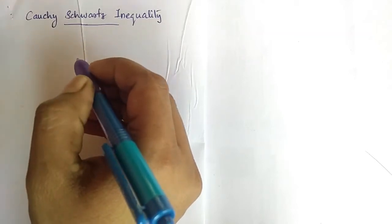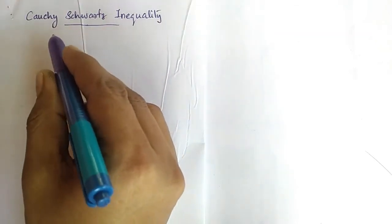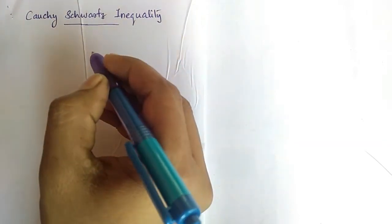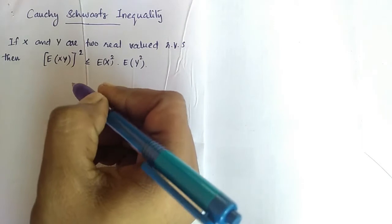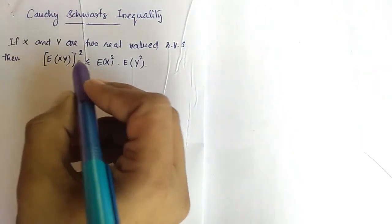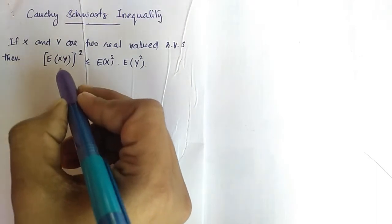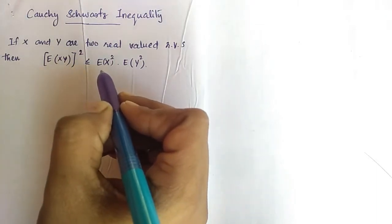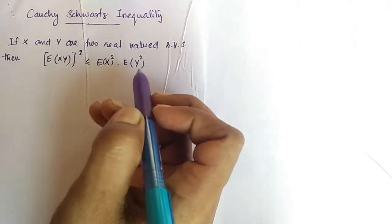Hi friends, today our topic is Cauchy-Schwarz inequality. Cauchy-Schwarz inequality states that if x and y are two real-valued random variables, then expectation of xy, that whole square, will be less than or equal to expectation of x square into expectation of y square.